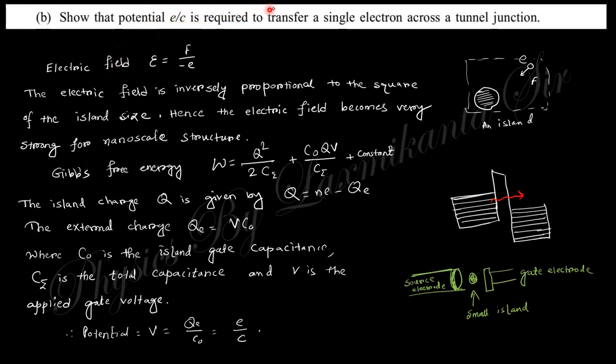Next question says: show that the potential e/c is required to transfer a single electron across a junction. When this junction is formed, the tunneling effect is happening. You know the formula: q equals cv. So from this formula, the potential equals e by c. Very simple.